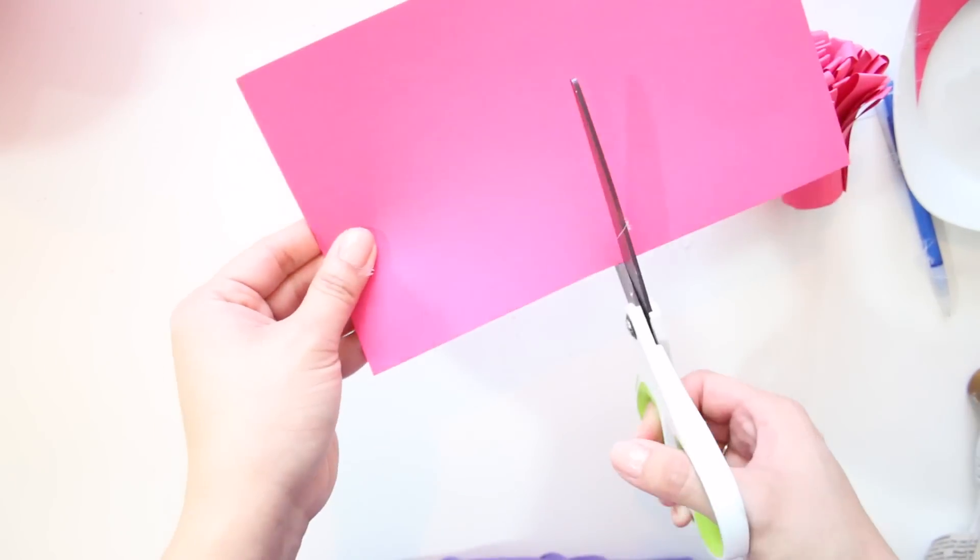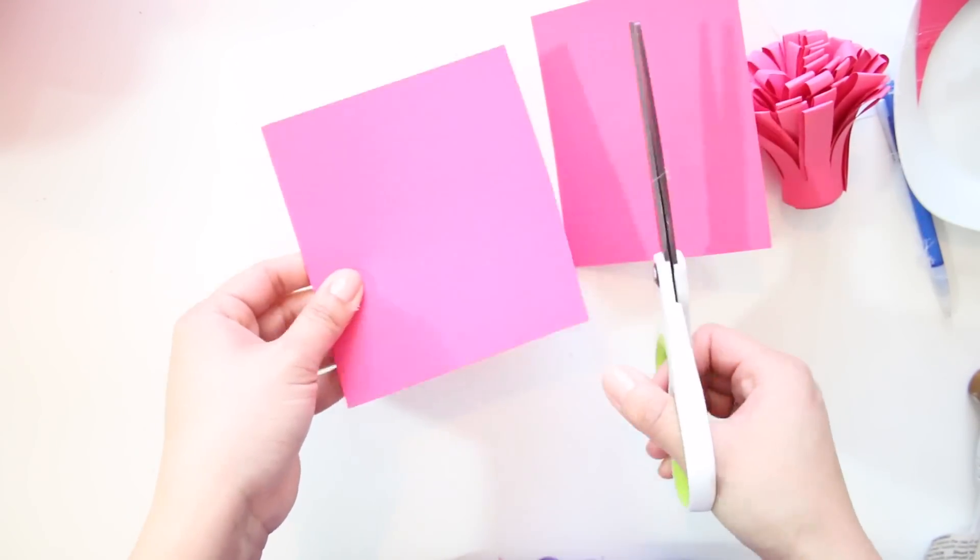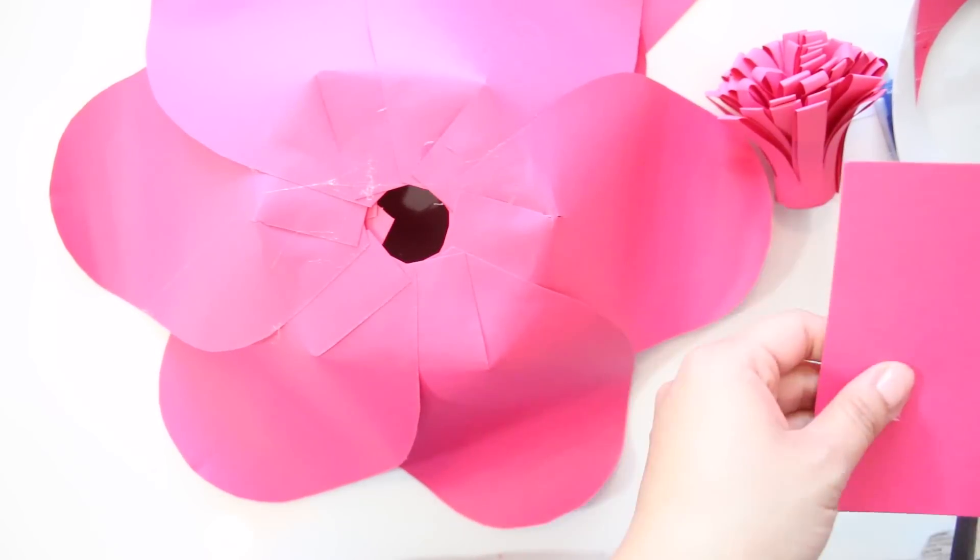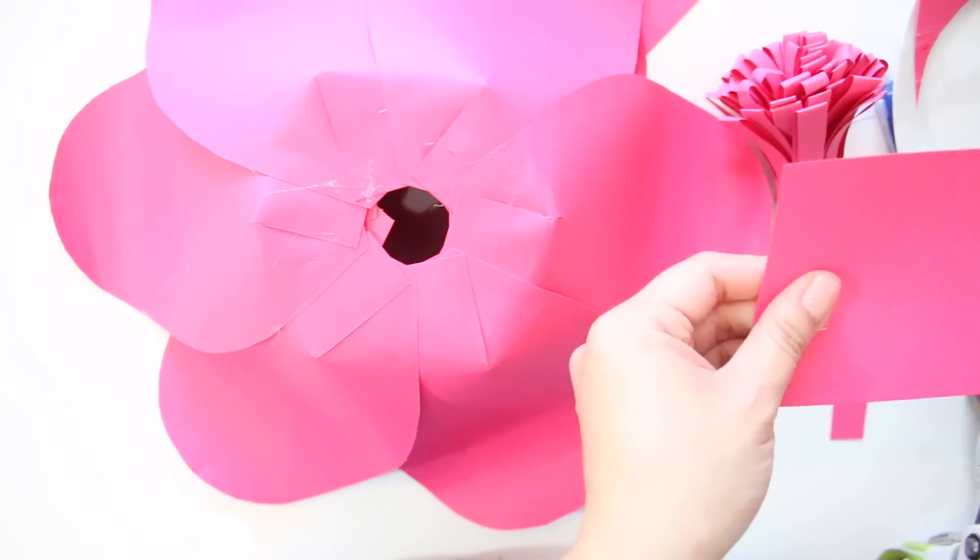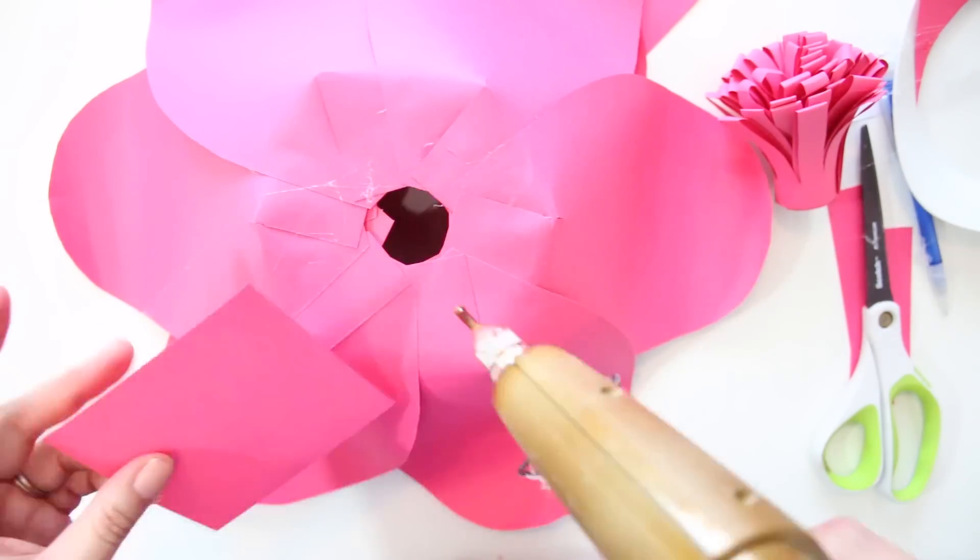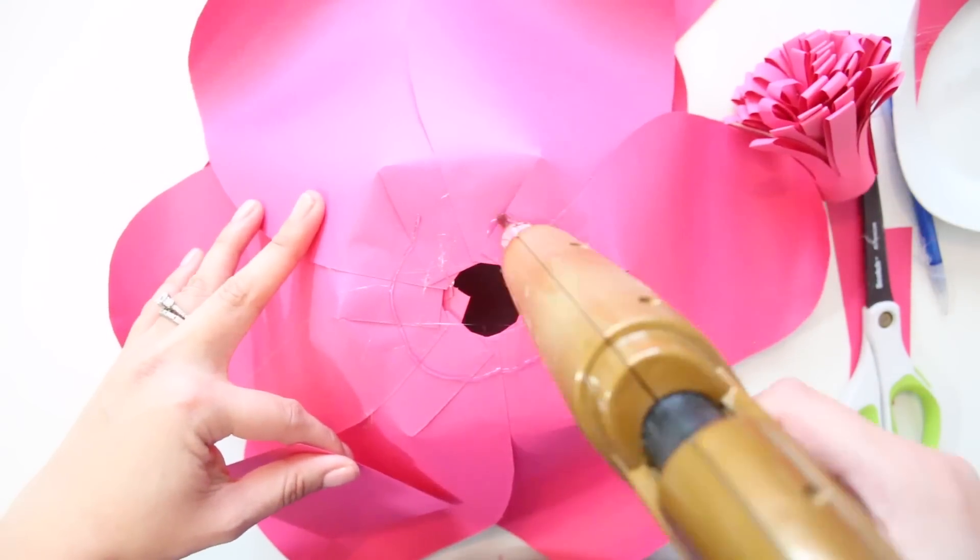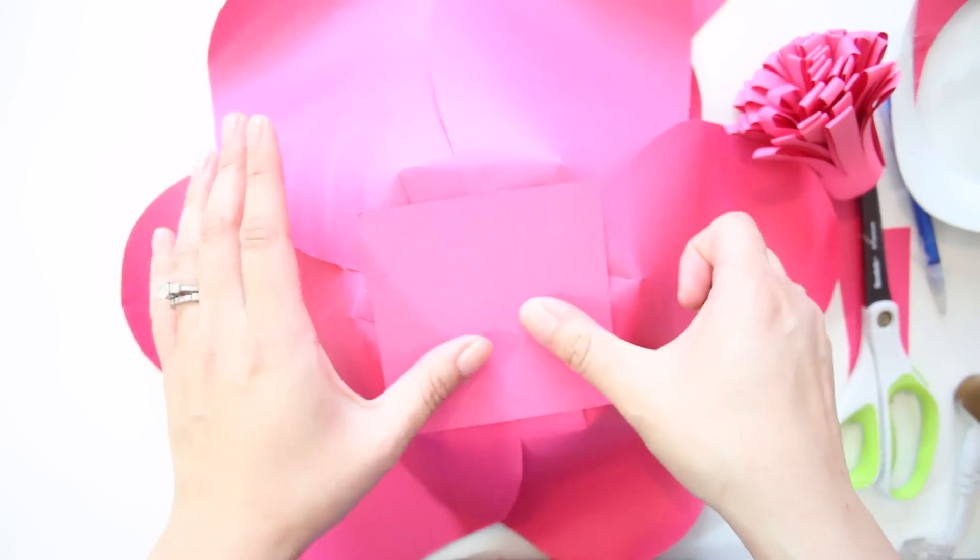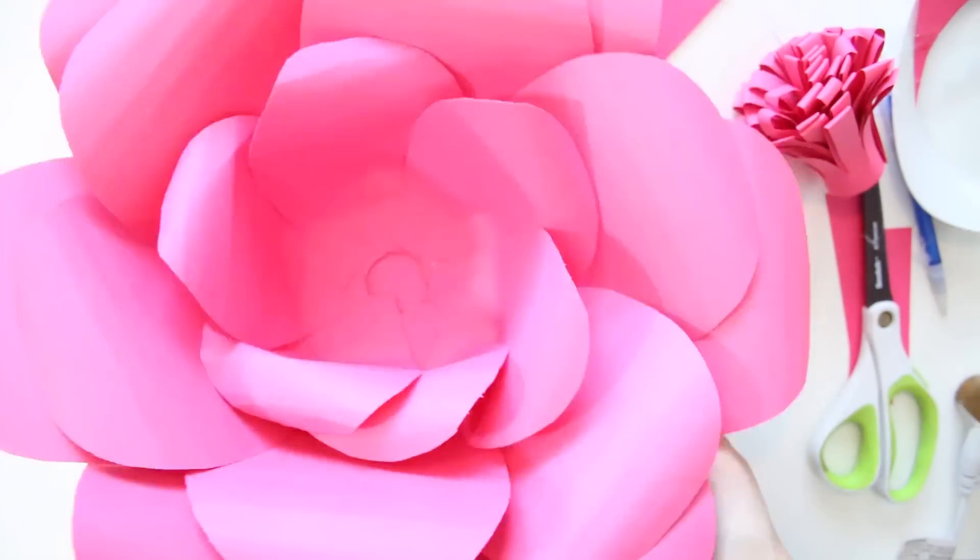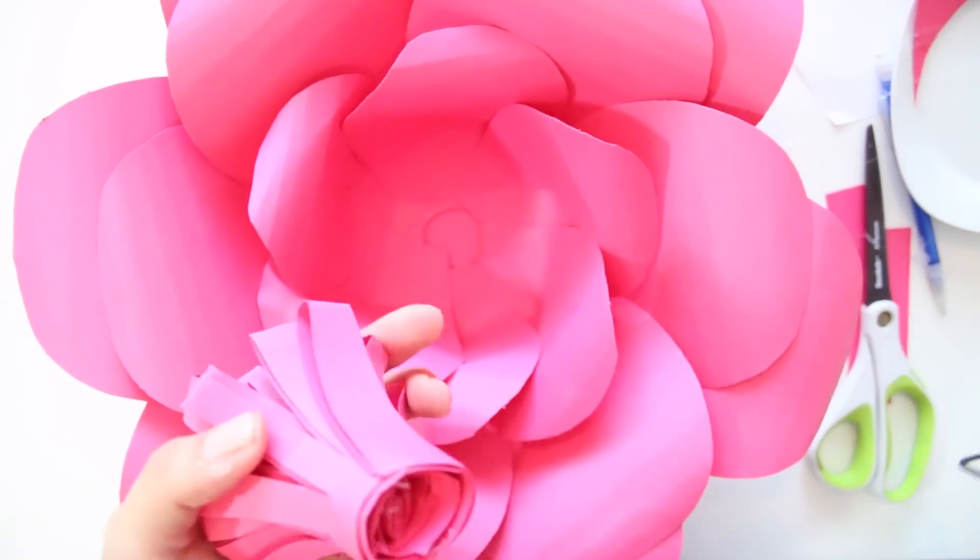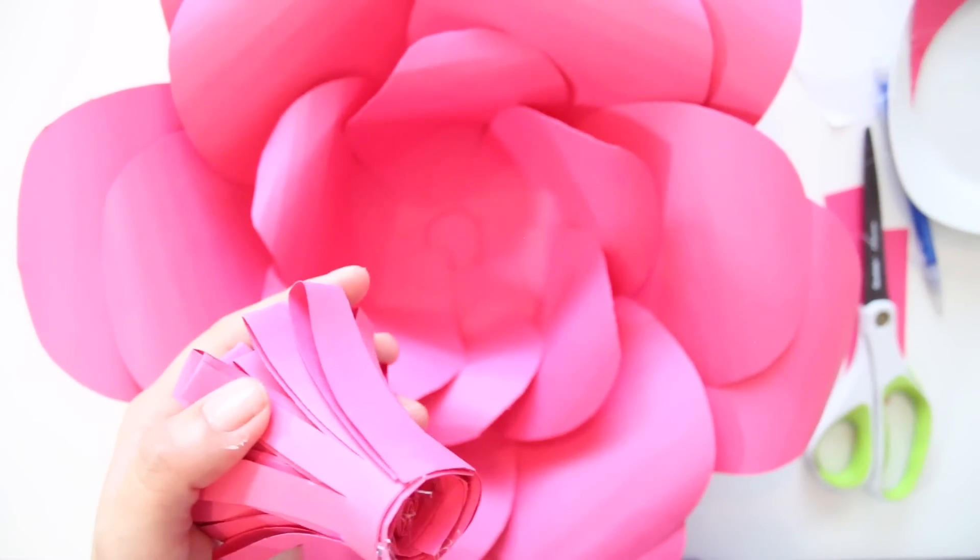Using a scrap piece of paper, cut out a square or a rectangle or a circle, whatever you want. Flip your flower over and glue it to the bottom of your flower to act as a base. Now you can add some glue to the bottom of your flower center and attach the center.